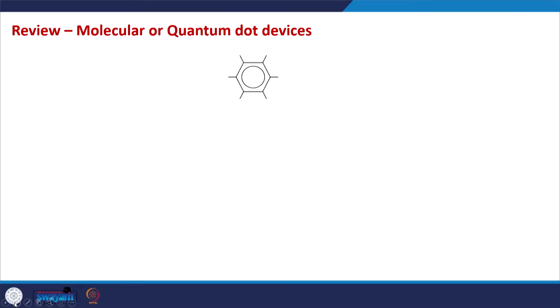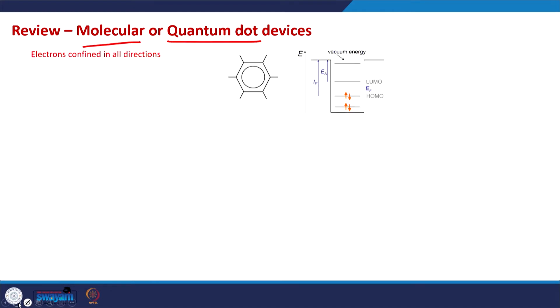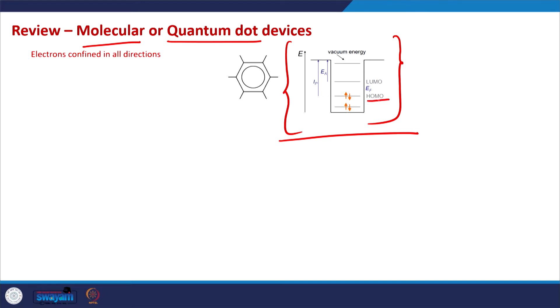Let us quickly review what we have seen in this regard so far. A quantum dot system, also known as a molecular system, has an energy structure that includes a highest occupied molecular orbital (HOMO) — the orbital up to which electrons are filled — and a LUMO, which is the lowest unoccupied molecular orbital.